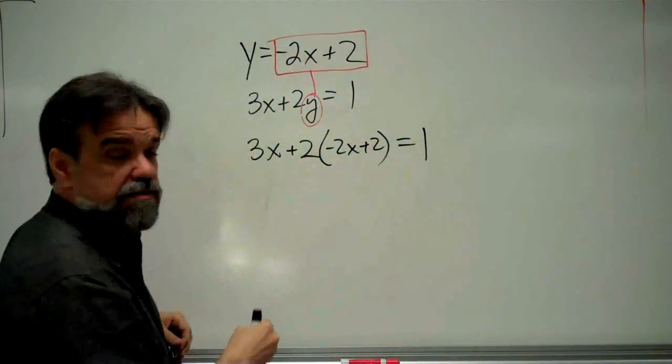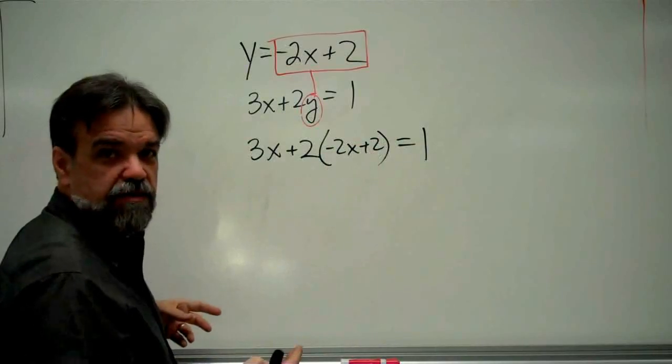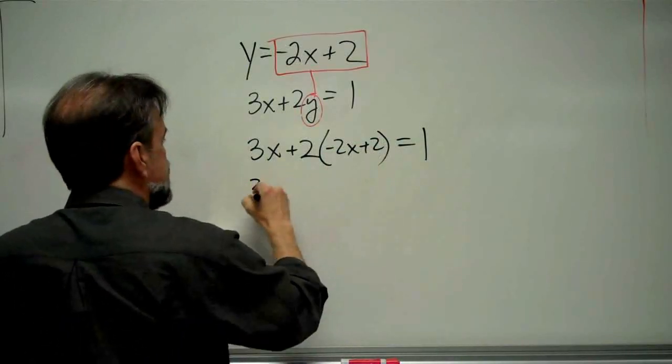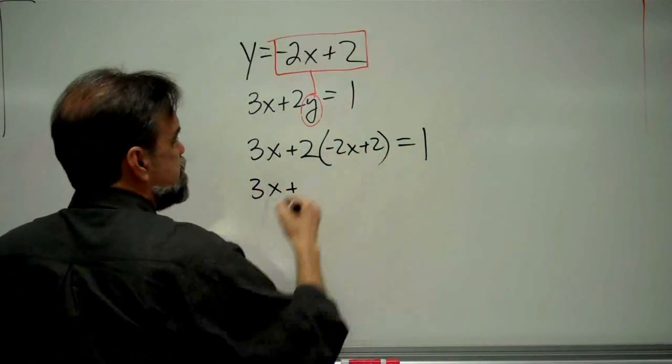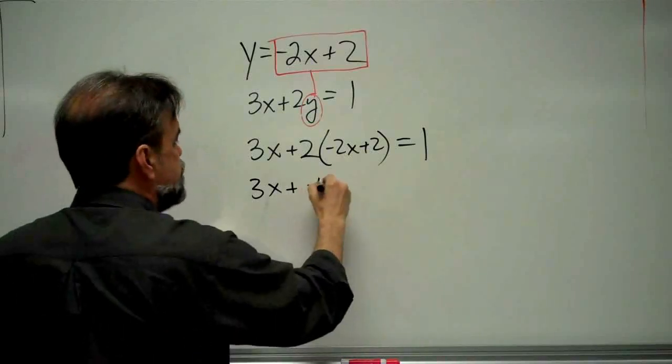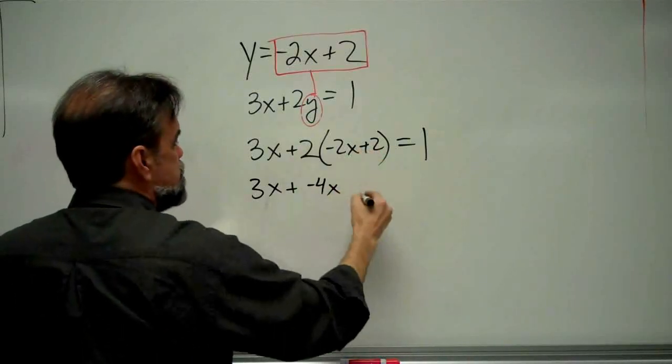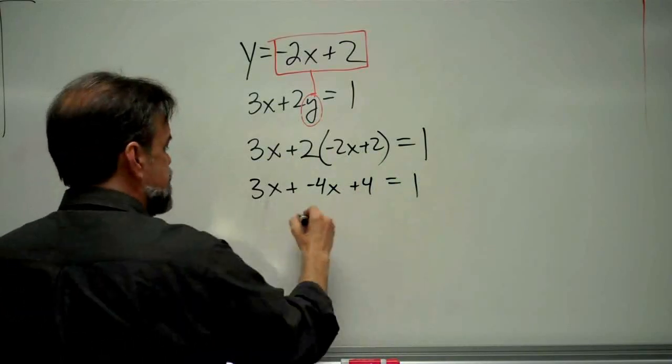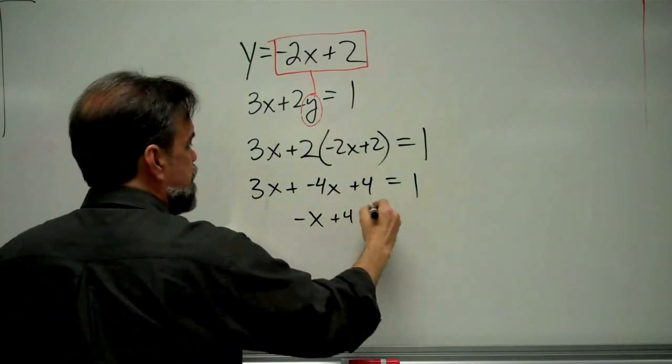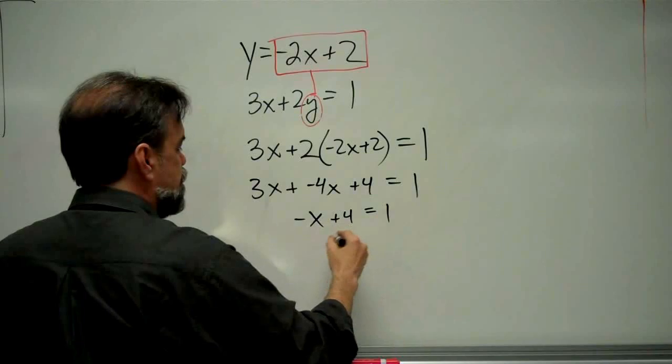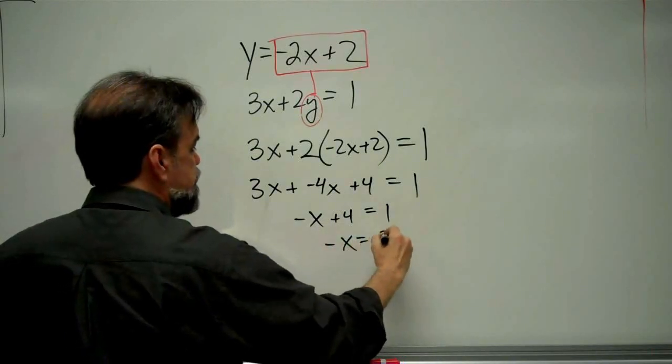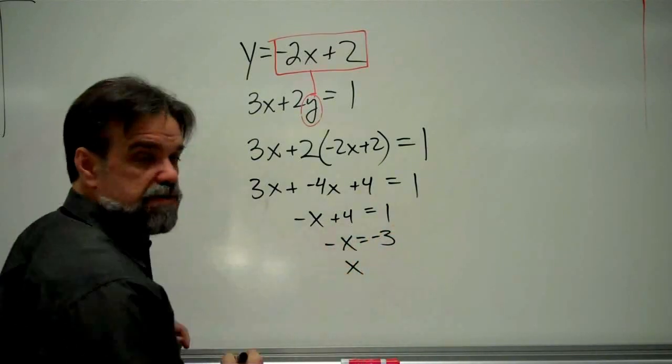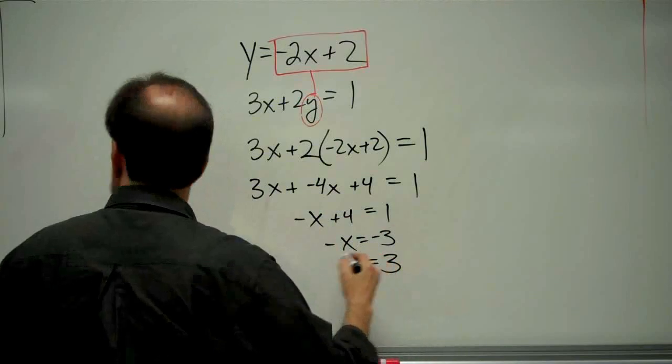All right. We know how to solve this. Distribute, combine like terms. Let's go ahead and do it. It's pretty easy. 3x plus 2 times negative 2x is negative 4x. 2 times 2 is 4, equals 1. 3x plus negative 4x, that gets me a negative x plus 4, equals 1. Subtract the 4, and I get negative x equals negative 3. Multiplying times negative 1, I get x equals 3.